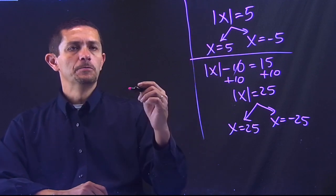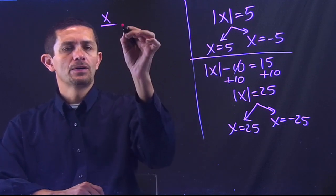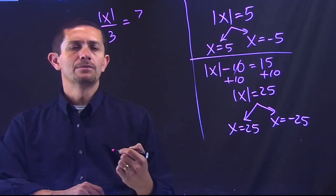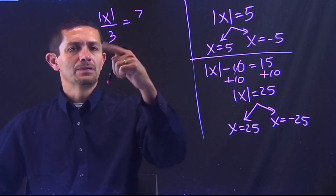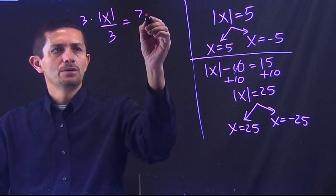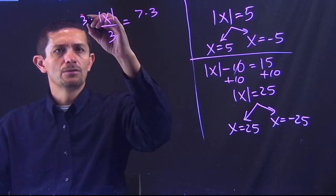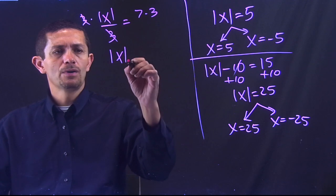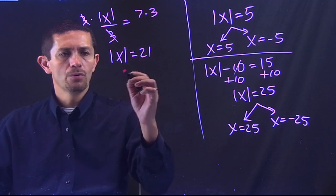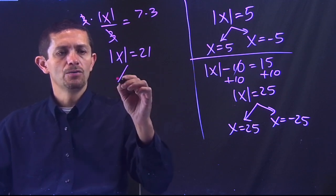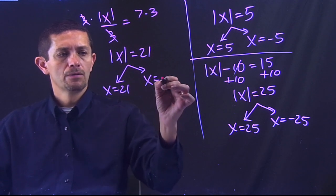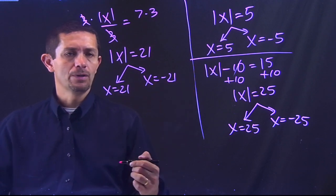Let's say that I have absolute value of x over 3 equals 7. If you notice, I have something dividing. Opposite division is multiplication. So, times 3, times 3 on both sides, those three will cancel out here, and I'll have absolute value of x equals 21. At this point, because the absolute value is by itself, then you break it into two different answers. One positive, one negative. That's the idea.